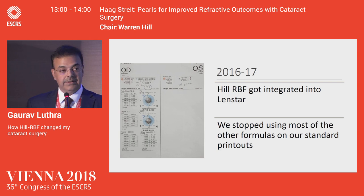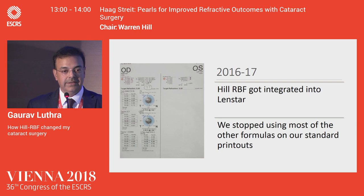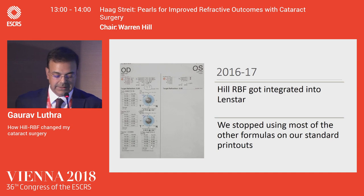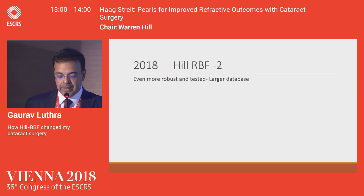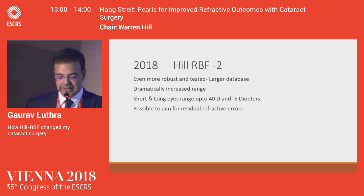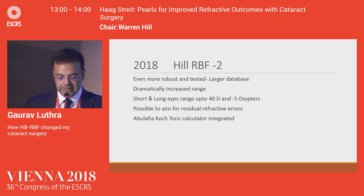The calculator came online, which made life much easier. We started using it more for all our patients, the out-of-bounds function was very useful, and it was updated regularly. Then it came on the LENSTAR somewhere in 2016 to 2017, and things got really nice because we stopped using most of the other formulas. We started relying more on the Barrett and the Hill-RBF — Barrett because we used it for toric calculations. Now the Hill-RBF comes with the Abulafia-Koch algorithm, which is pretty similar to the Barrett toric. In the long eyes and the short eyes, the Hill-RBF sometimes outperforms the Barrett. In 2018, Hill-RBF version 2 really improved things with a much larger, more robust database, fewer outliers, and a dramatically increased range of measurements.